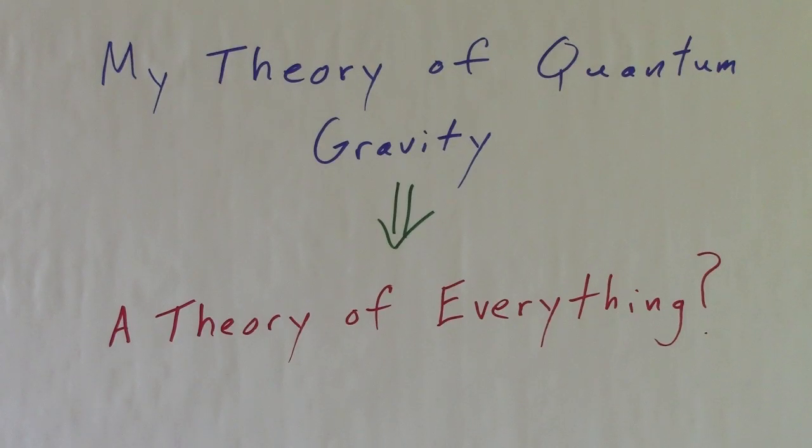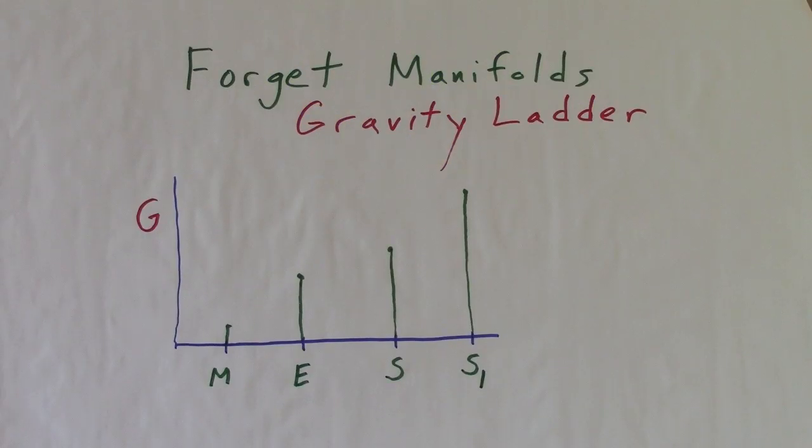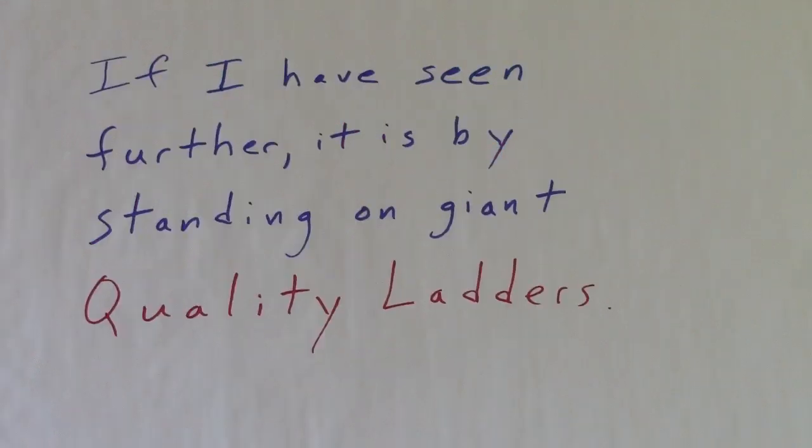Now it's time to present my theory of quantum gravity. Has it led to a theory of everything? Forget about the manifolds, just use my gravity ladder. In this case, I have the Moon, the Earth, Saturn, and the Sun. Every object fits on my gravity ladder. If I have seen further, it is by standing on giant quality ladders.